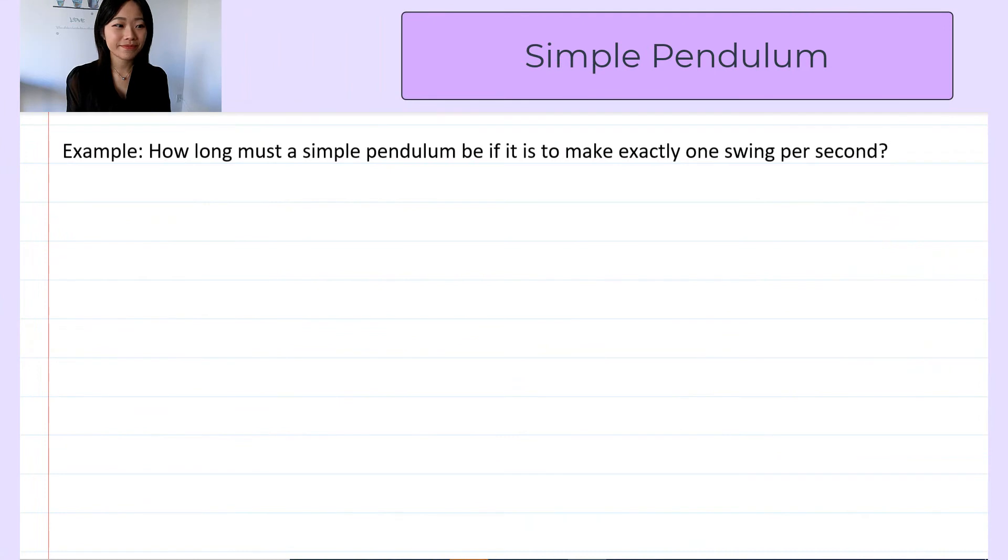Let's look at this example. How long must a simple pendulum be if it's to make exactly one swing per second? Remember the quantity period that we talked about a few weeks ago? Period is the time taken for one oscillation.